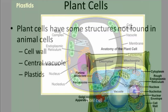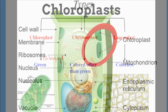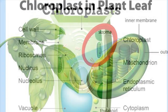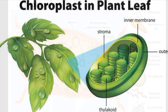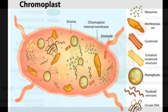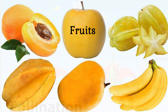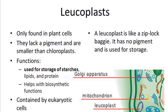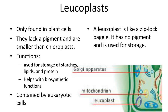Plastids – These occur only in plant cells. The three types of plastids are: Chloroplasts, which contain the green pigment chlorophyll that traps solar energy and utilizes it to manufacture food for the plant; Chromoplasts, which contain pigments giving red and yellow colors to flowers and fruits, and by imparting color to flowers, they attract insects for pollination; and Leucoplasts, which are colorless plastids that store food in the form of carbohydrates, starch, fats, and proteins.